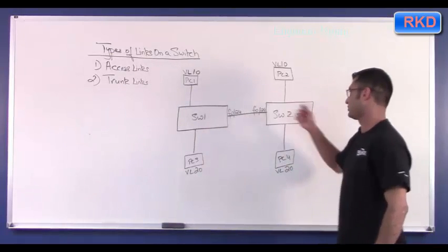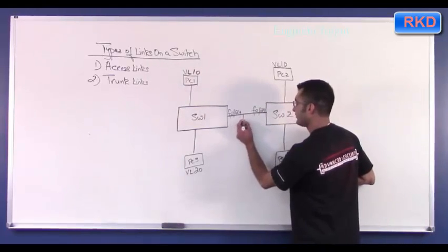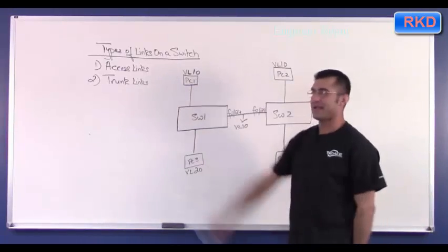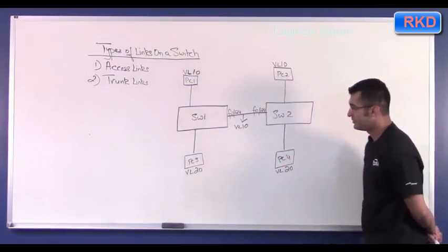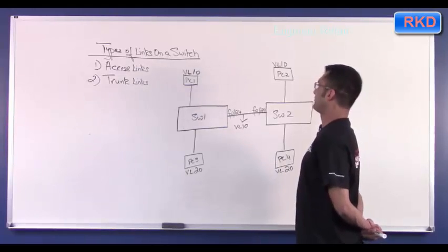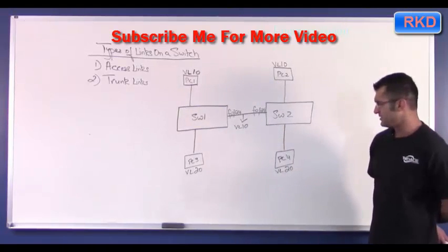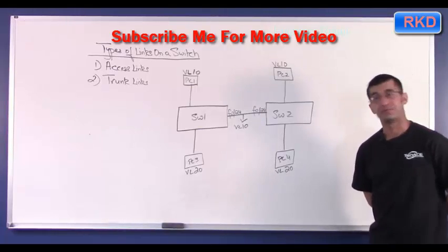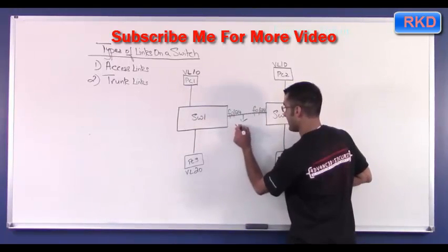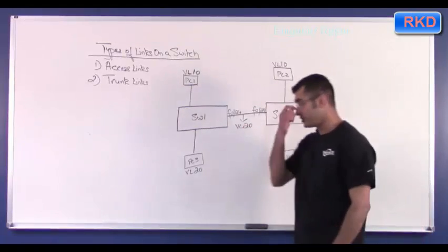If we were to put port 24 — the link between Switch One and Switch Two — in VLAN 10, then only PC One and PC Two, both in VLAN 10, can talk to each other. We are only traversing VLAN 10 across this link. PC Three and PC Four can't talk to each other. If I were to put this link in VLAN 20, then PC Three and PC Four would be able to talk, but PC One and Two would not.